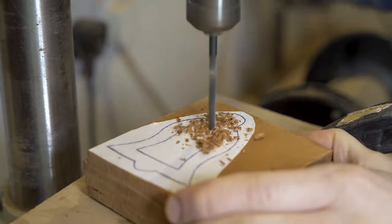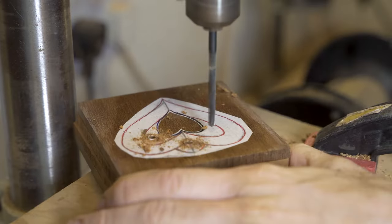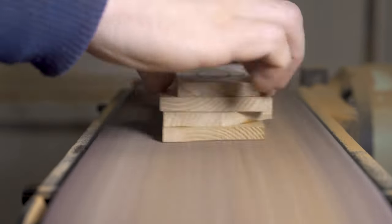We then proceed to our pillar drill and drill the holes that will be required for doing the pierce work. Sanding on the belt sander gets the back of these projects nice and flat and makes the process of cutting out slightly easier.